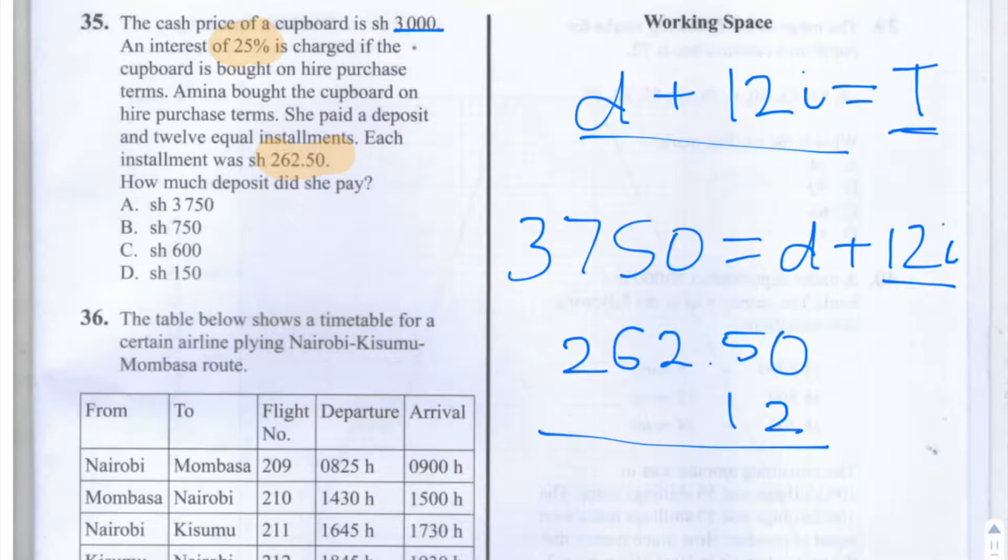So 262.50 times by 12. We have 0 times by 2 is 0, 2 times by 5 is 10, that's 0 carry a 1. 2 times by 2 is 4, we add this 1 that we carried previously, that's 5. 2 times by 6 is 12, that's 2 carry a 1. 2 times by 2 is 4, we add the 1 that we carried previously, we get a 5. And then 1 times by 0 is 0, 1 times by 5 is 5, 1 times by 2 is 2, 1 times by 6 is 6, 1 times by 2 is 2.